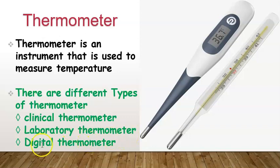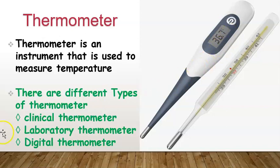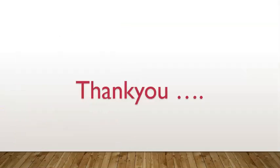The third type is the digital thermometer, also called a mercury-free thermometer because it does not contain mercury. The temperature is displayed on an LED screen — for example, 36.7 degrees. This concludes our lesson on heat, temperature, and thermometers. Thank you, students.